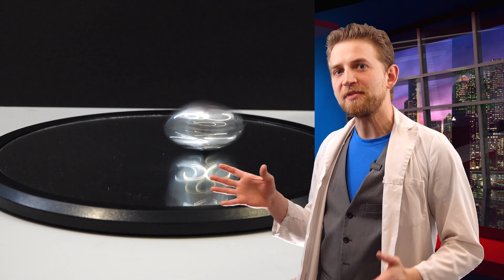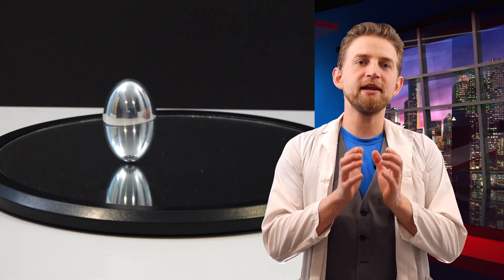So if we spin it, it will rise and stand on end. The center of mass actually rises away from the table. Now, why does it do that?